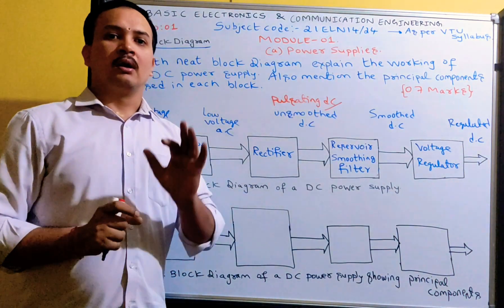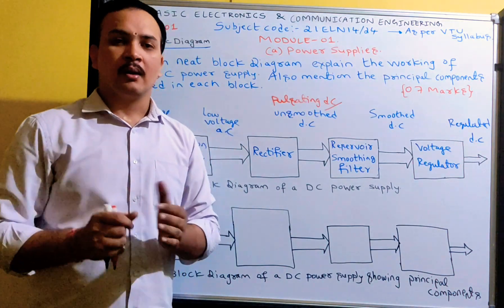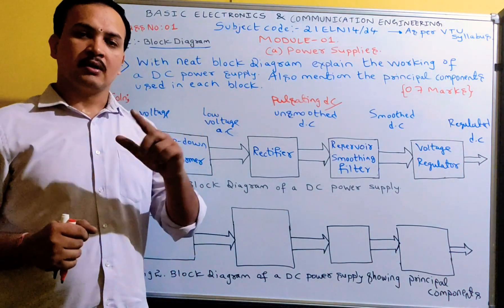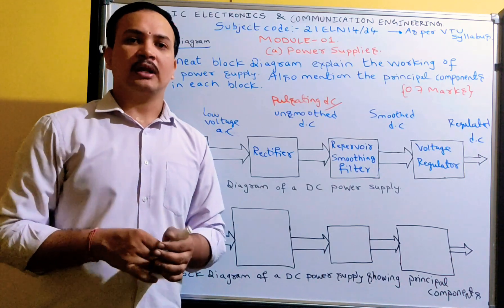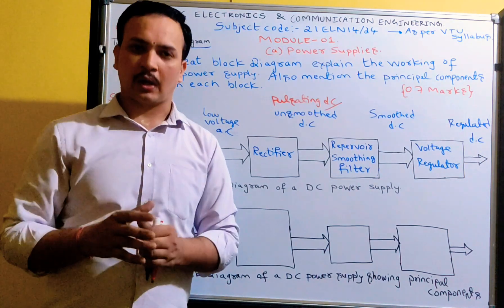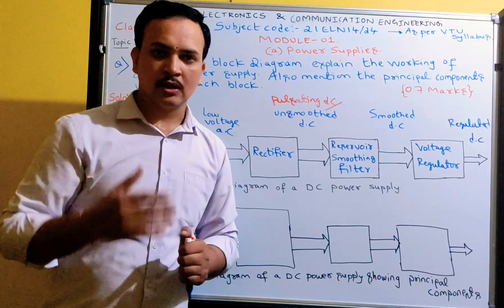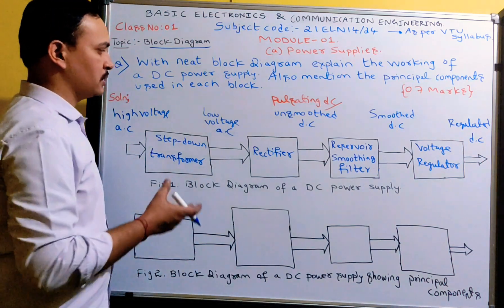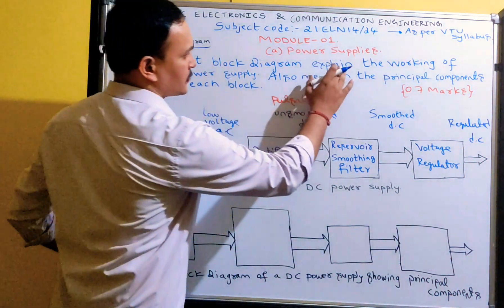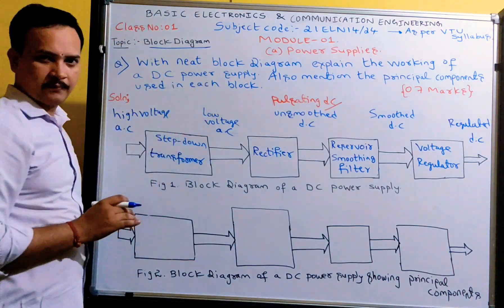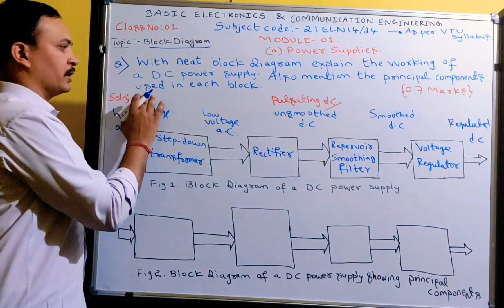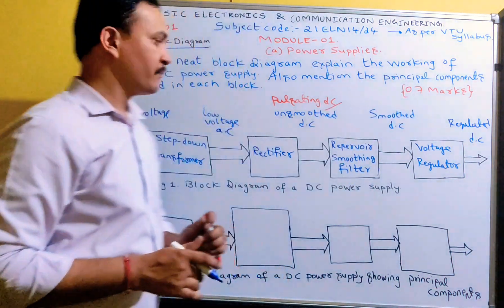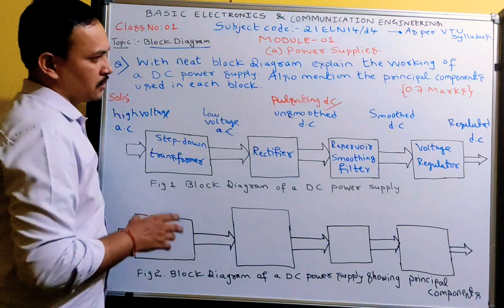Most electronic circuits operate at DC voltages, but the available voltage is AC. With the help of that AC voltage, we want to get DC voltage. For that purpose we have to design a power supply circuit to get DC output voltage. The question asked in university examinations is: 'With a neat diagram, explain the working of DC power supply and also mention the principal components used in each block.' This is asked for seven marks.